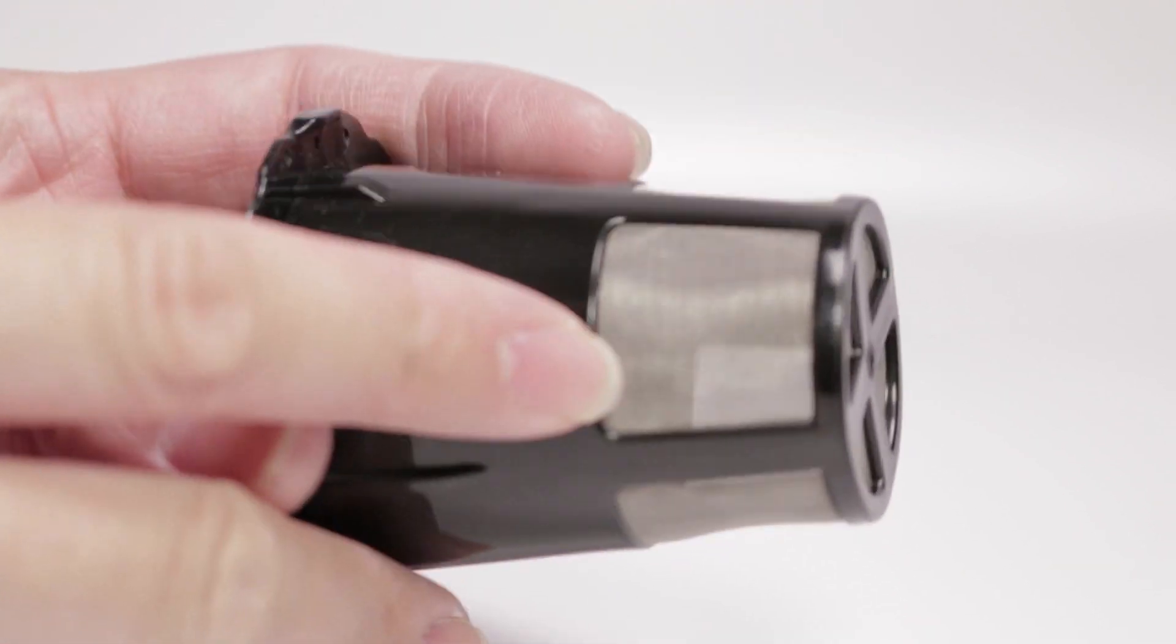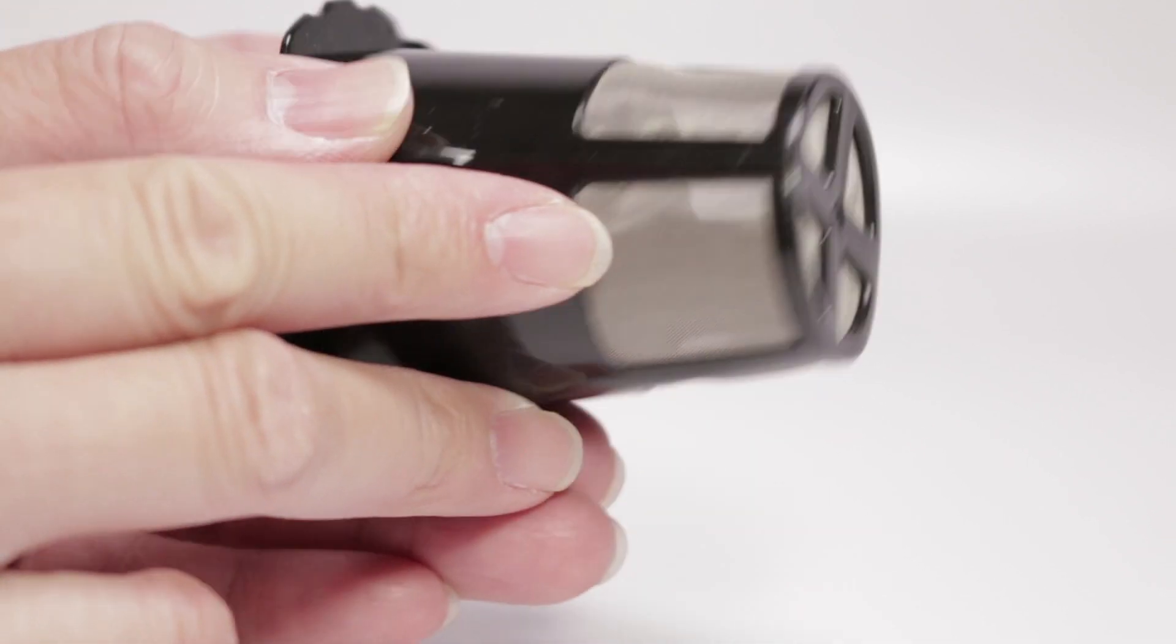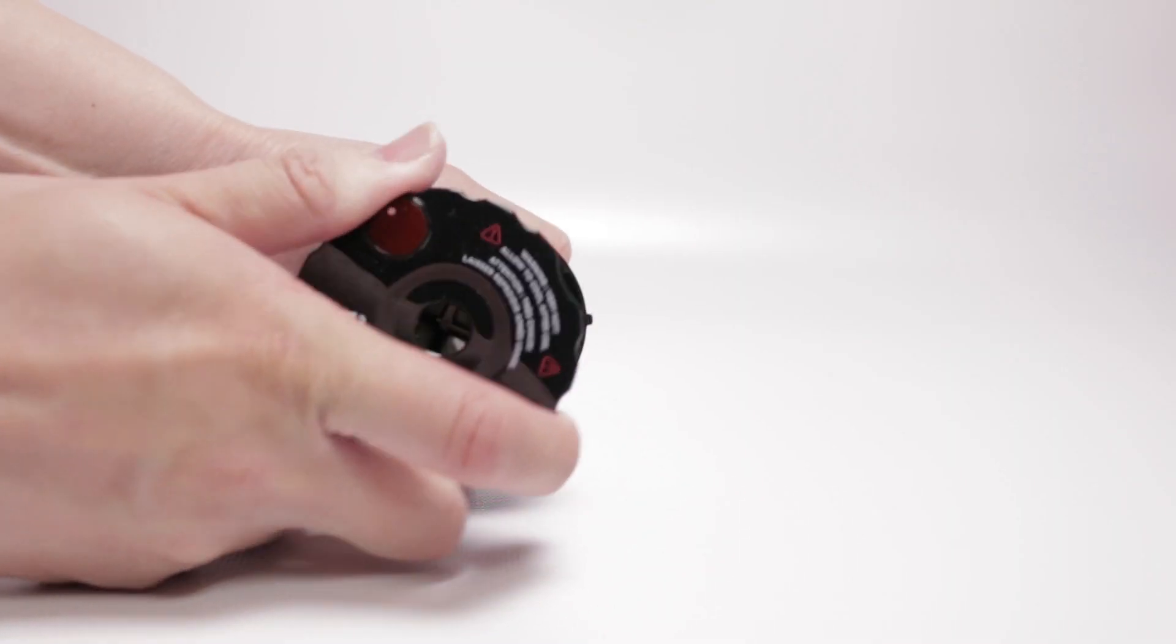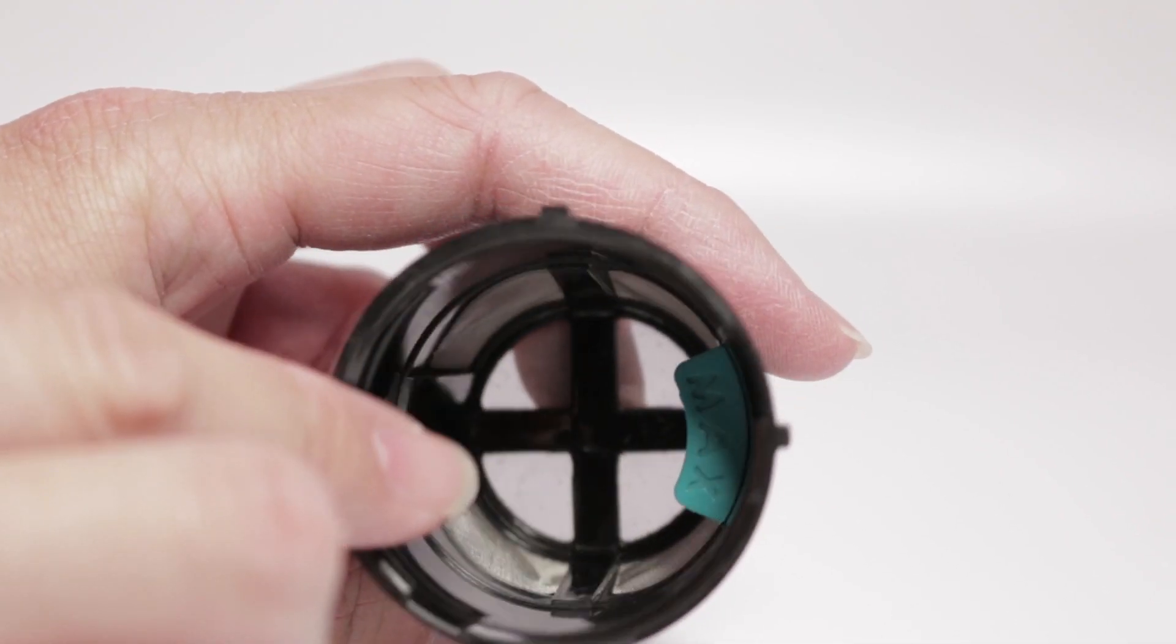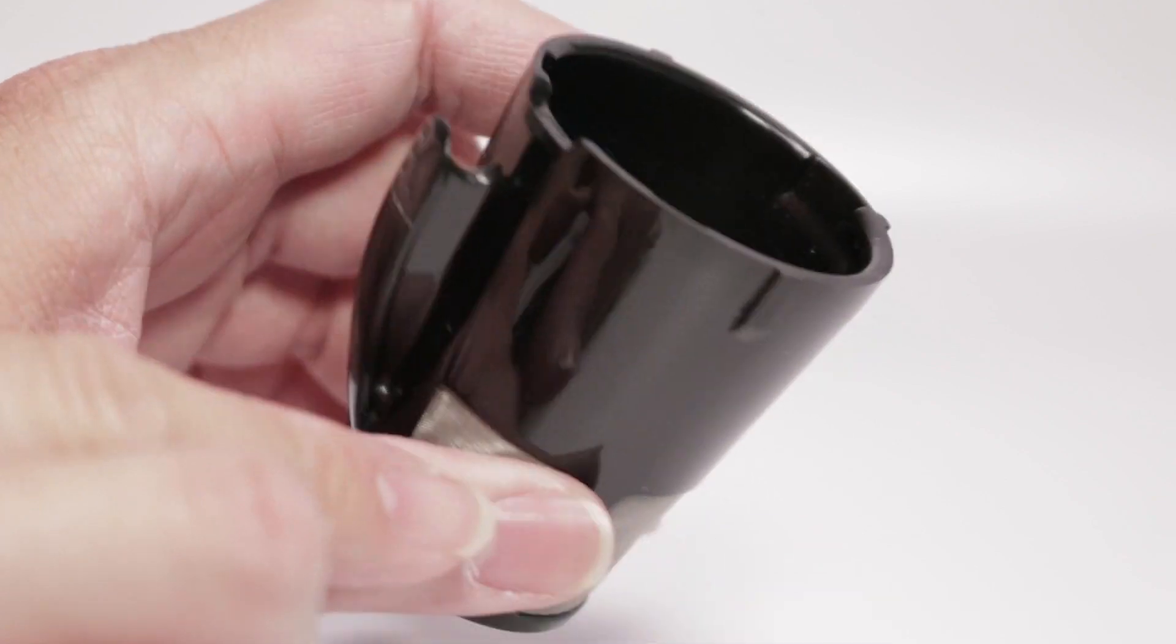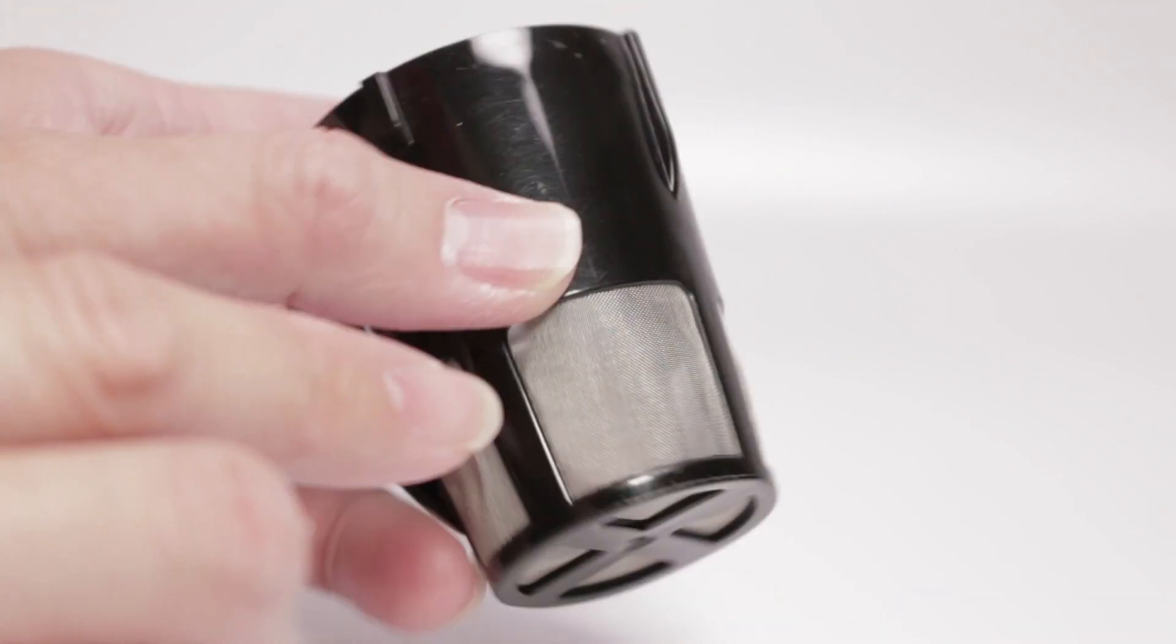The filter is a cup shape, and the mesh extends all the way around. To remove, you just twist, and you can see inside, and you see that the filter is pretty thin, but it's made from metal and it seems very durable.